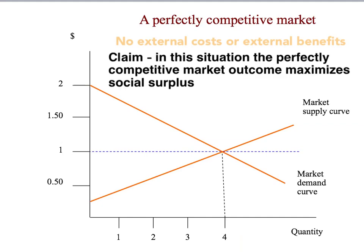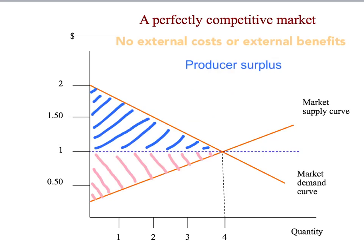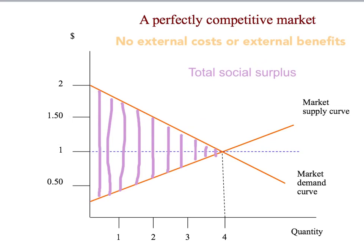Let's work out what social surplus is in the perfectly competitive equilibrium. Consumer surplus is the area under the demand curve, above the price line, up to the quantity consumers buy — given by the blue shaded area. Producer surplus is the area above the supply curve, under the price line, up to the quantity sold — given by the pink shaded area. Add those two together and we get our total social surplus, given by the purple shaded area — a triangle representing total social surplus at the perfectly competitive market equilibrium.